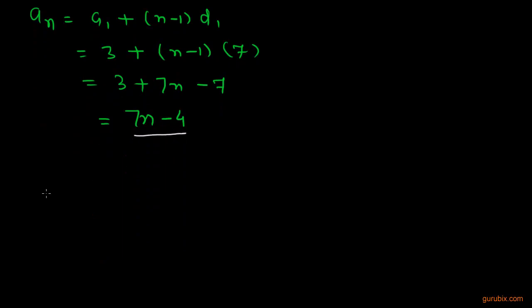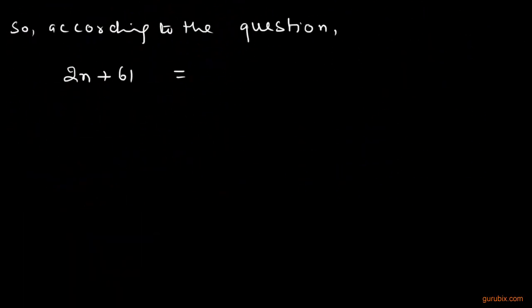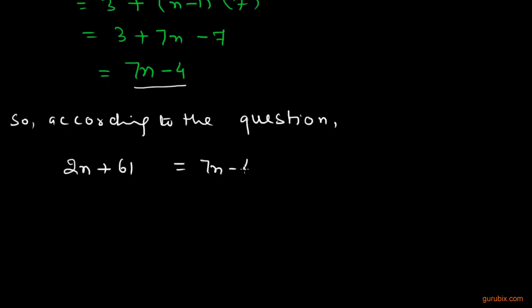We are given that both the nth terms are equal. So according to the question, 2n plus 61 equals 7n minus 4. And we can calculate it easily.